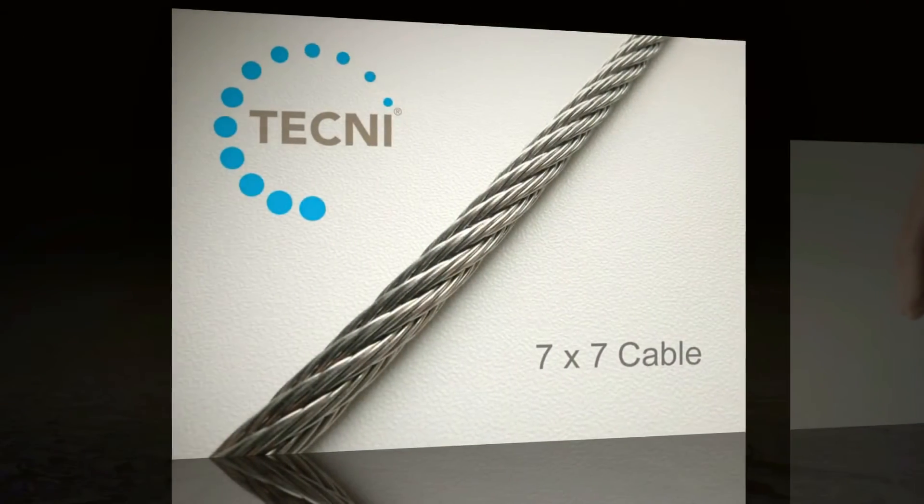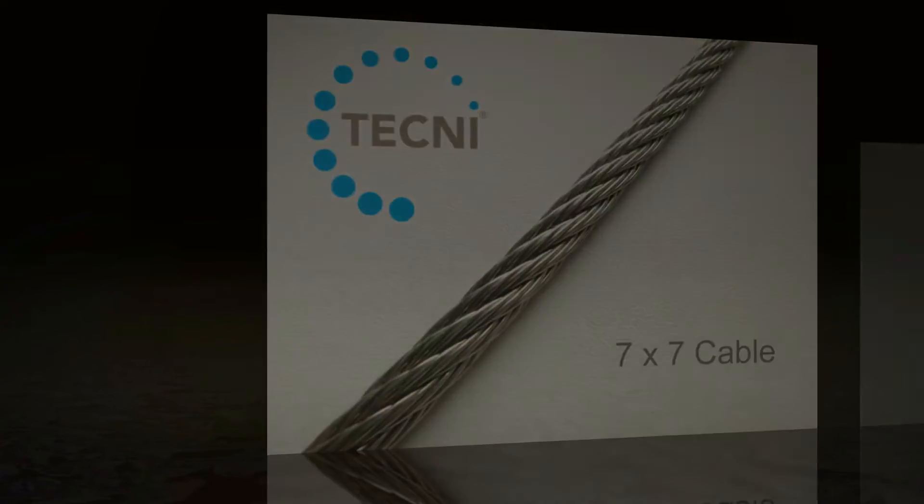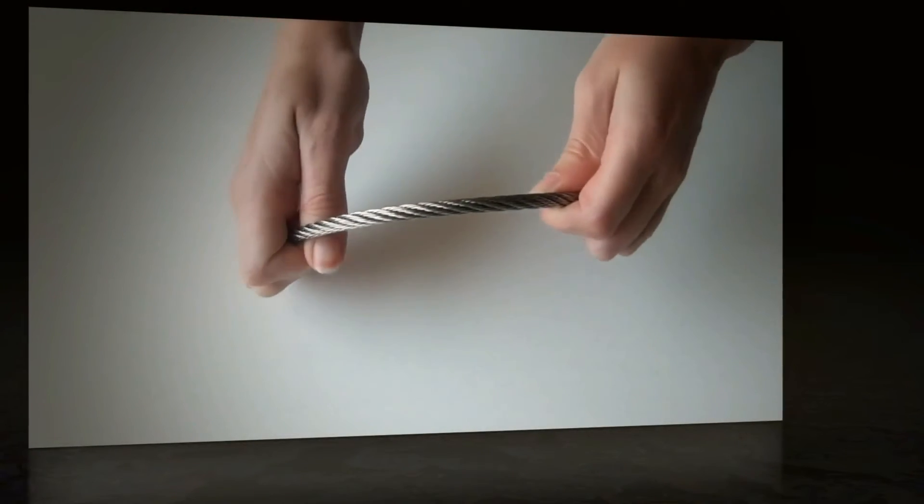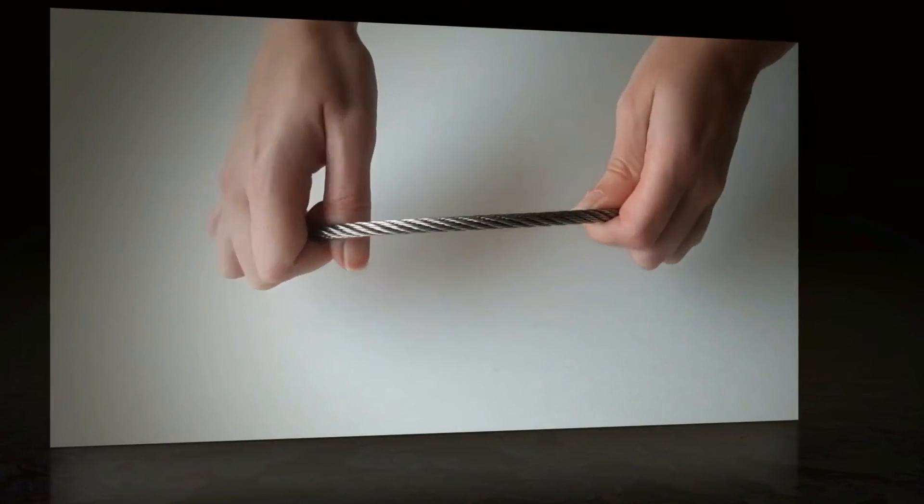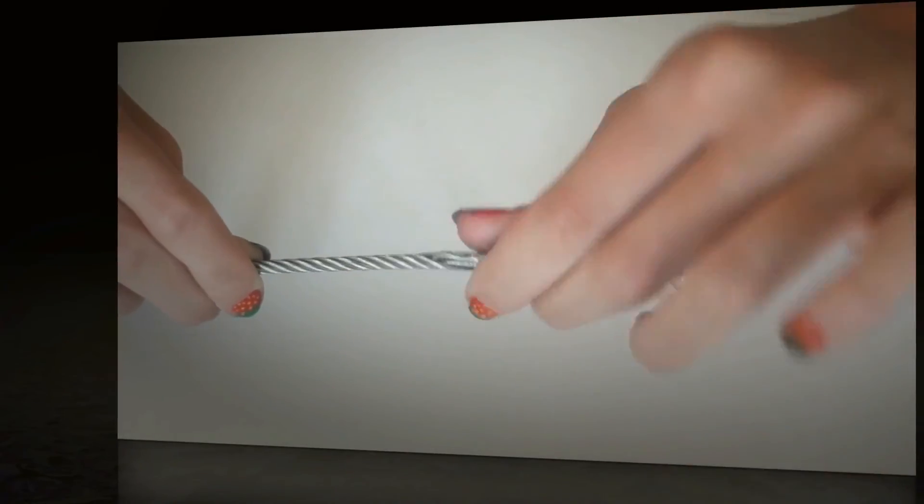The 7x7 means there are seven strands of seven individual wires, making a total of 49 wires in a rope. With more wires, the 7x7 is more flexible than the 1x19 but less flexible than the 7x19 construction. It is very flexible in cable diameters below 2mm.